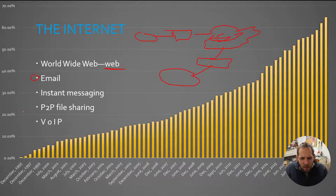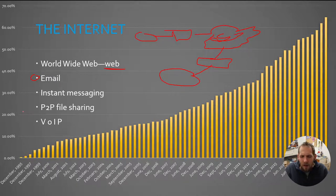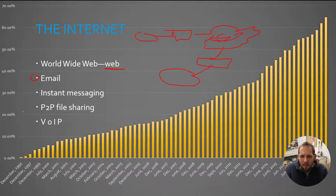We also have VoIP — Voice over Internet Protocol — which is our audio calls or phone calls. Skype is probably the best-known VoIP, and it's grown to include video chats as well. VoIP isn't necessarily only voice — it can be audio and video. Google Hangouts, Apple, and Facebook can all do it.